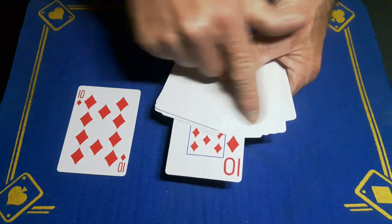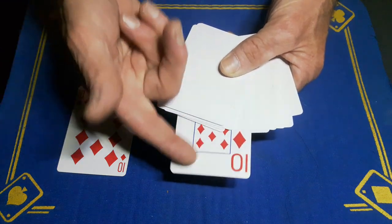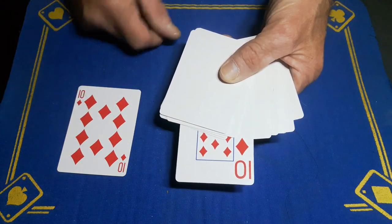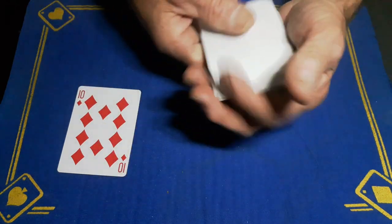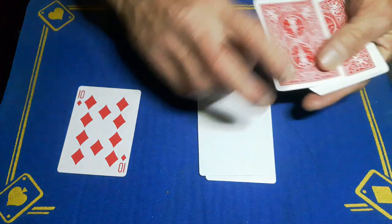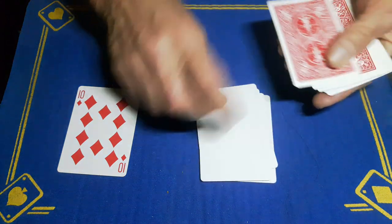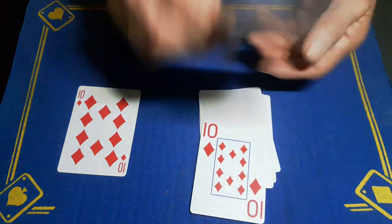So I've got a total of 14 cards: 13 blank face cards, one matching card to your prediction, and this matching card is in the seventh position. So that's one, two, three, four, five, six - your prediction card.